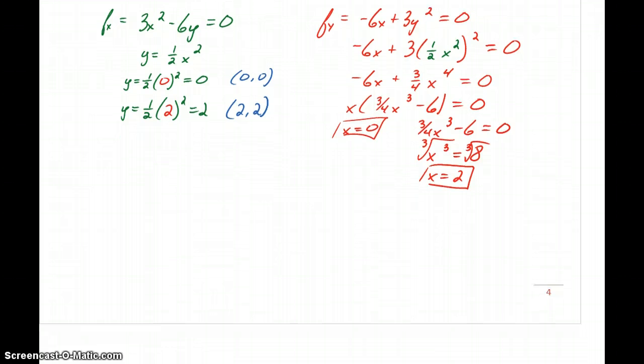So we had a slightly harder task here of finding our two critical points. And now we have more work ahead of us because now we have to consider those values for capital A, B, and C for both the point 0, 0 and the point 2, 2. So we'll start off by considering 0, 0. So A will be the second derivative with respect to x evaluated at 0, 0. In this case, the second derivative with respect to x is equal to 6x. Evaluating that at 0, 0 gives us a value of 0.